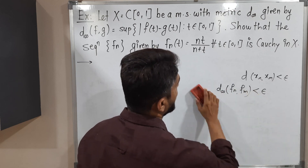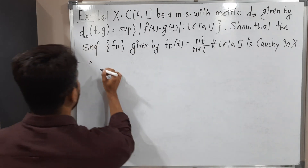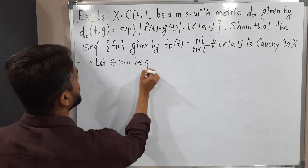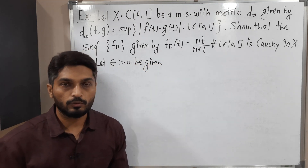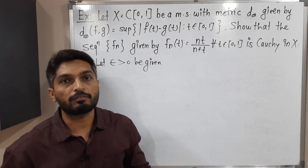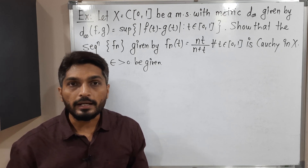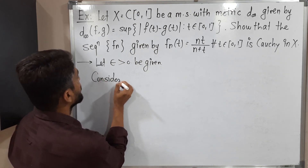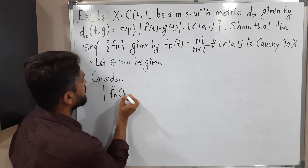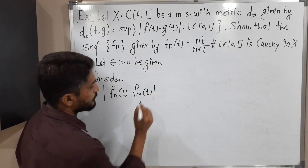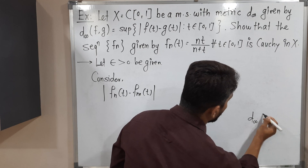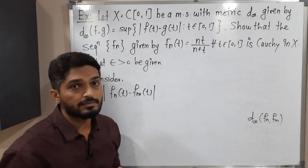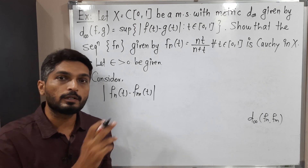You can easily guess: first we need to take epsilon. Let epsilon greater than 0 be given — I have taken any arbitrary positive epsilon. We have to prove D∞(Fn, Fm) less than epsilon. But before that, I will try to find the value of this mod. So let us consider mod of Fn(t) minus Fm(t). In the definition of D∞, mod F(t) minus G(t) is required, so I am going to find the value of this mod first, then we will go to D∞.